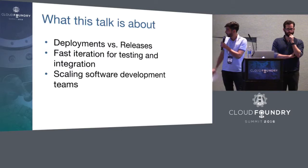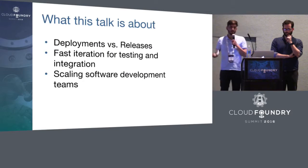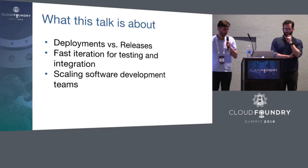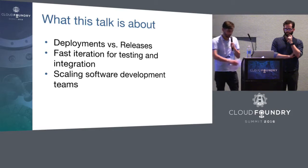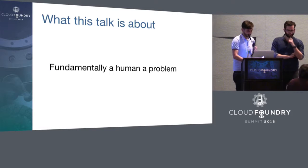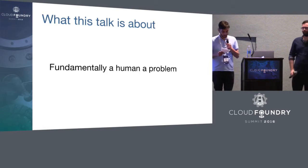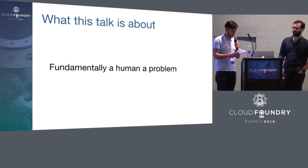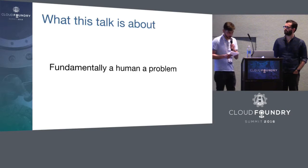We're going to talk a little bit about deployments versus releases, fast iteration — we want to be developing quickly — and we're going to talk about scaling development teams. As we add more and more people to Cloud Foundry, this becomes a problem. It's fundamentally a human problem. We're going to have teams all over the world trying to communicate, in different locations, different companies, different time zones.